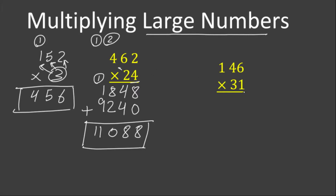We now move to the second example. We follow the same steps we did in the first example. We first multiply the ones digit with all numbers at the top. 1 times 6 is 6. 1 times 4 is 4. 1 times 1 is 1. Now for the tens digit: 3 times 6 is 18 — write 8 under the tens place, not under the ones place, and write a zero under the ones place so we don't get confused. Carry 1 above the tens place. 3 times 4 is 12, plus 1 is 13 — write 3 and carry 1.